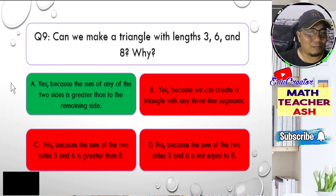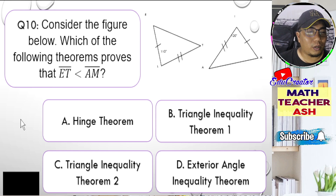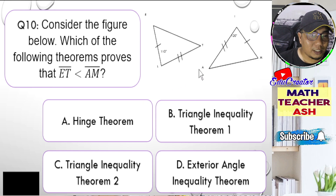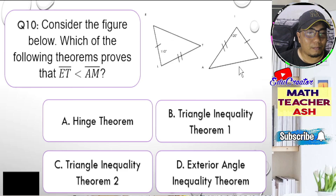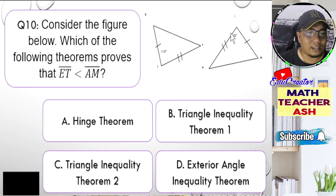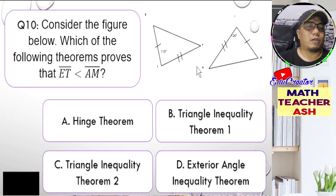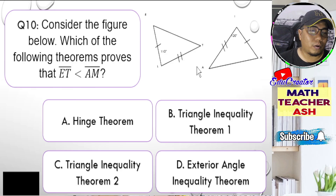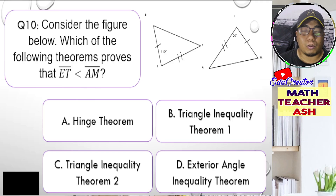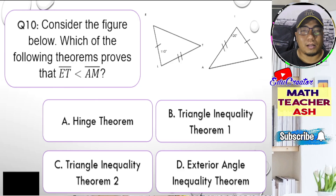Let us go to question number ten. Consider the figure below. Which of the following theorems proves that side ET is greater than side AM? There are markers showing that one side equals another and another side is equal to another. Is it A, hinge theorem; B, triangle inequality theorem number one; C, triangle inequality theorem number two; or D, exterior angle inequality theorem? I'll give you five seconds to think about your answer.